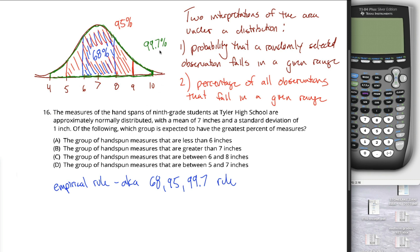With the 68-95-99.7 rule — which by the way are approximations; the real area isn't exactly 68%, it's like 67.9 or 68.1 — using these three facts and the symmetry of the normal distribution, we can figure out the approximate area underneath the curve in each different region, which tells us the percentage of all 9th grade students with hand span measures in a given range.